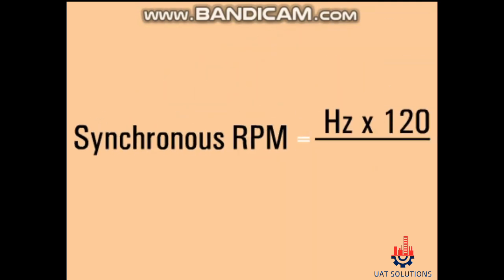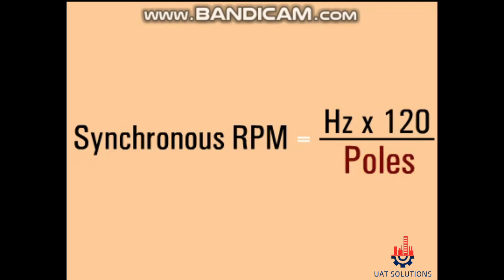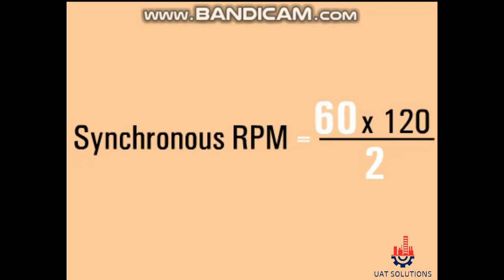The synchronous RPM formula shows that the motor speed is directly proportional to the applied frequency and the number of poles in the motor. Therefore, a two-pole induction motor running at 60 hertz will run at 3600 RPM synchronous speed, less the slip required to produce the induction effect at full load.